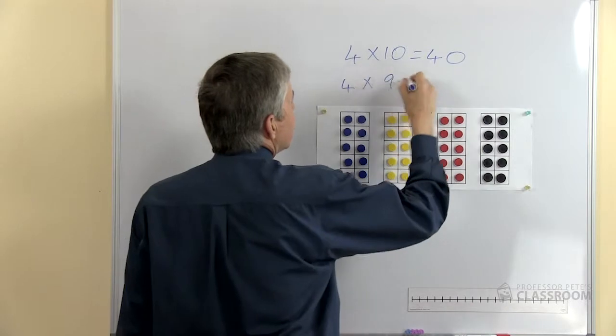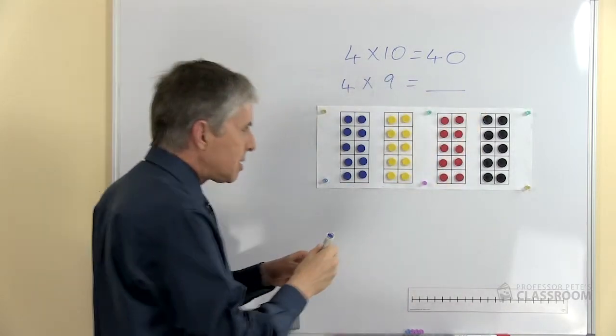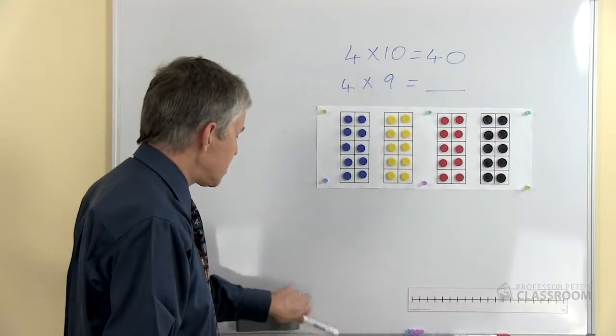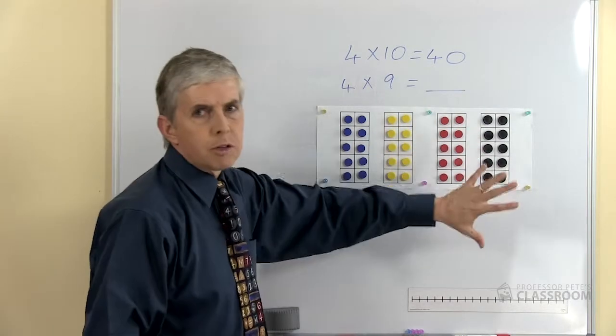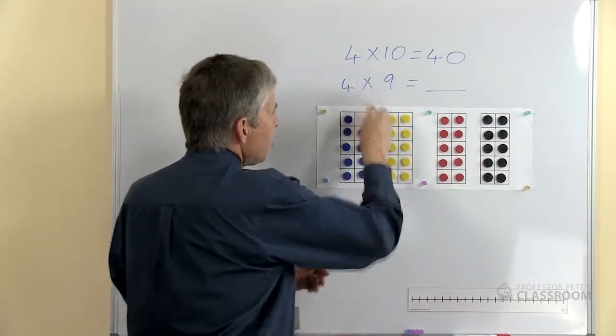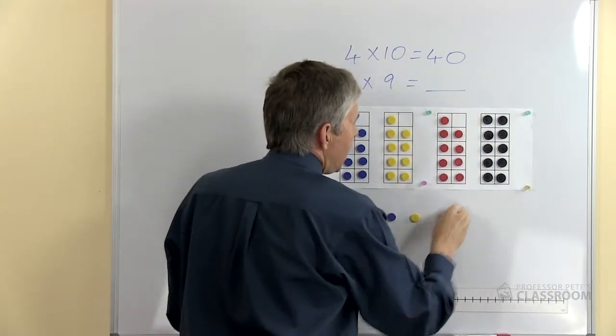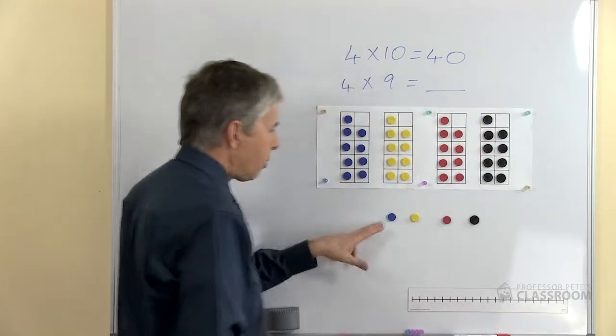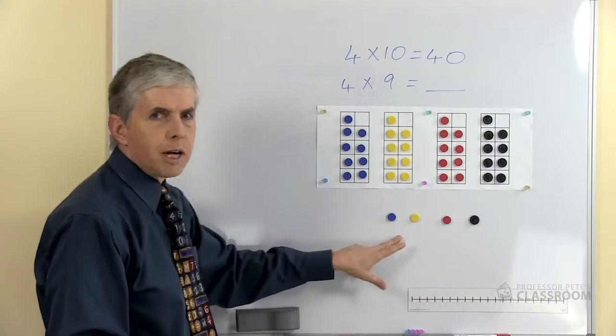Now we can use that to work out a question like four times nine. What would four times nine equal if we know four times ten? Well, if there were nine we would take one away from each group of ten, and we can see the four that I've removed are here.